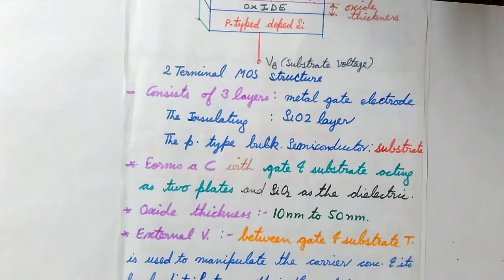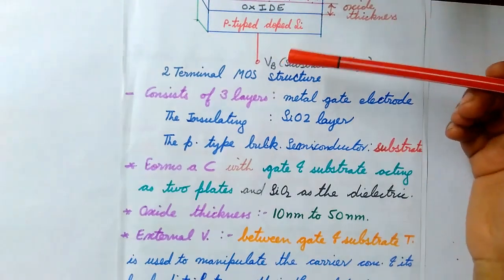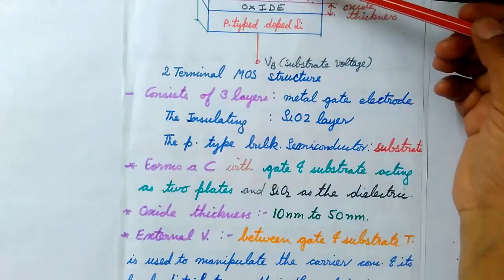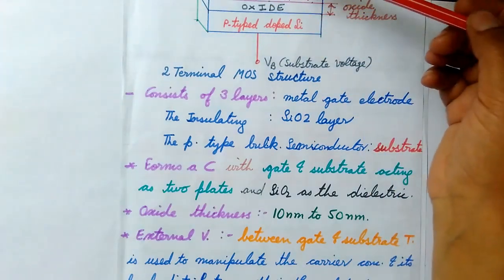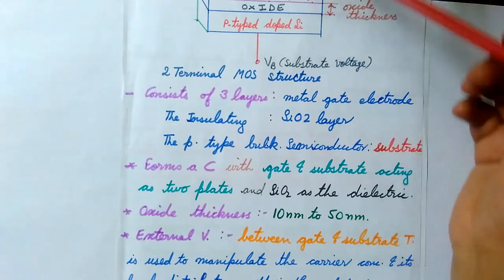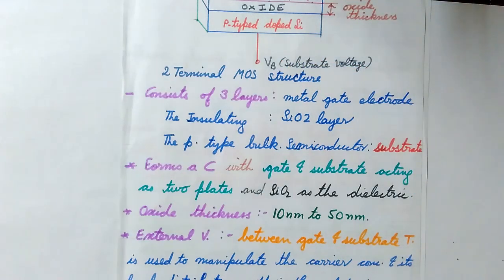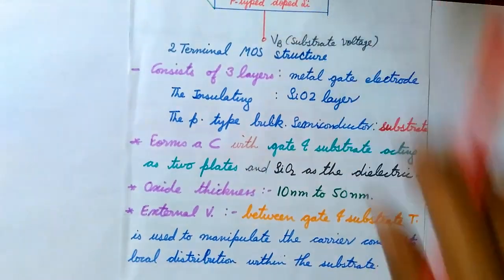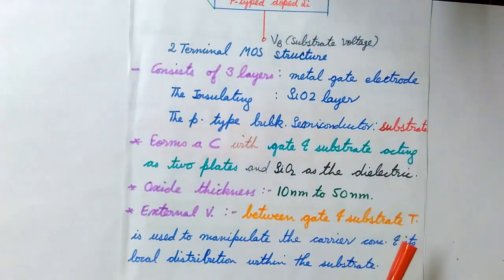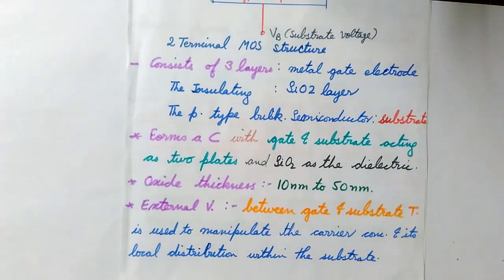Now the external voltage is applied between the gate and the substrate terminals. So here in this picture we can see three layers and two terminals: the gate terminal and the substrate terminal. The external voltage, that is the gate voltage, is used to manipulate the carrier concentration and its local distribution within the substrate.